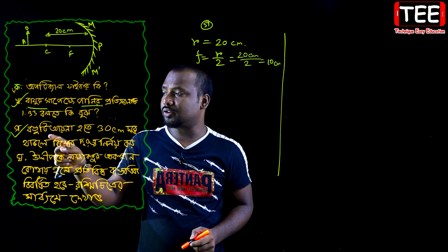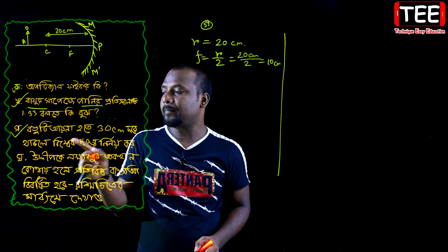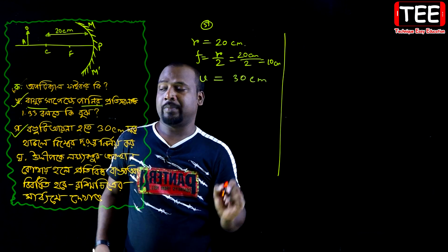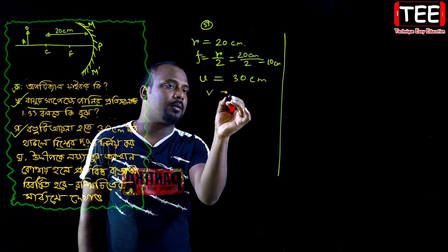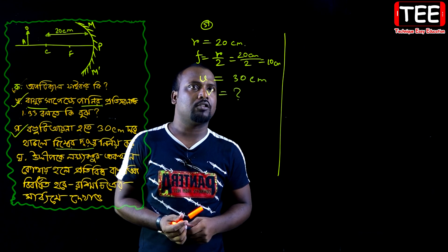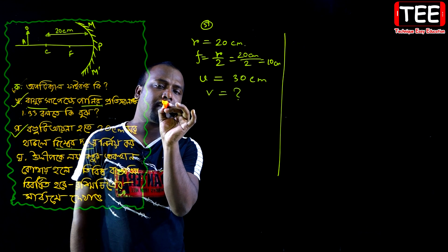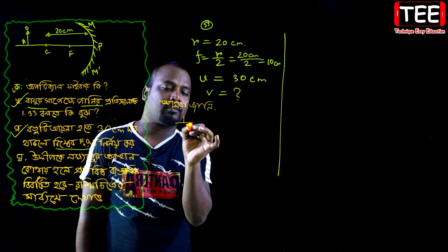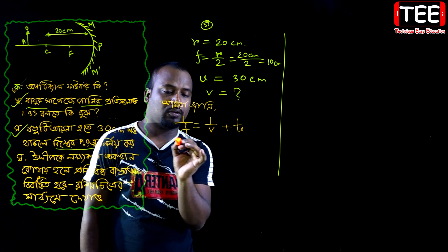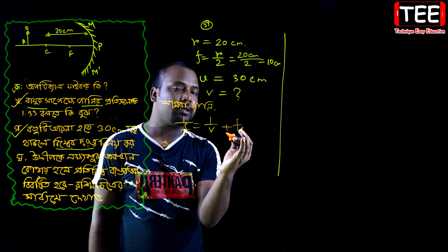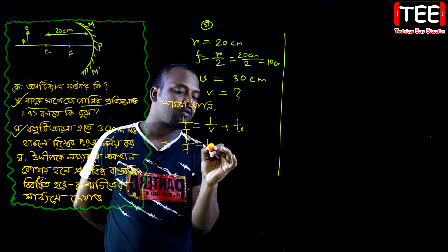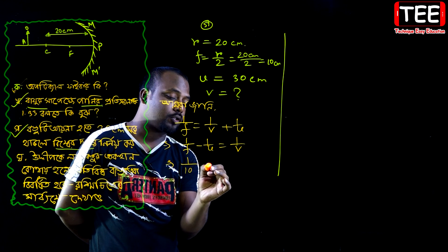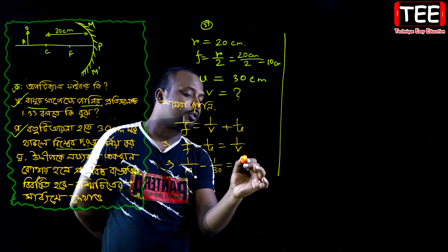Finally we need to find the image distance using the mirror formula. For this function, the function equals zero. We need to find that 1 by f equals 1 by v minus 1 by u. This gives us 1 by f minus 1 by u minus 1 by v. You will find f in this way: f is 10 cm, u is 30 cm, minus 1 by v. If you have this form, then 1 by 4.